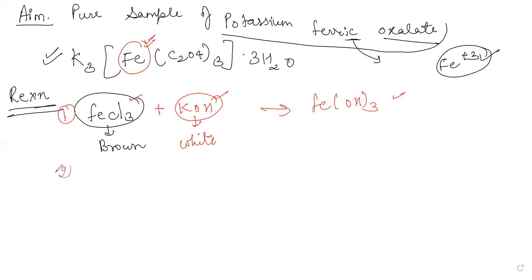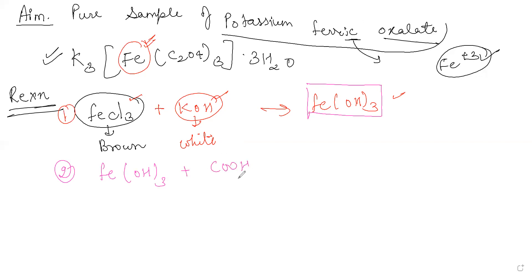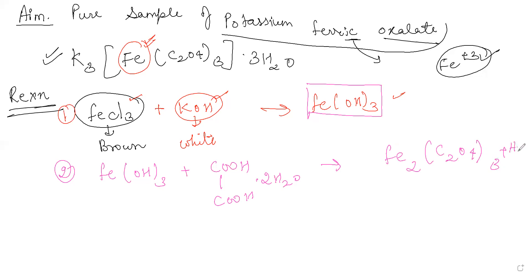The next reaction: the ferric hydroxide you just prepared is going to react with oxalic acid to form Fe₂(C₂O₄)₃ — ferric oxalate — and water is given off.